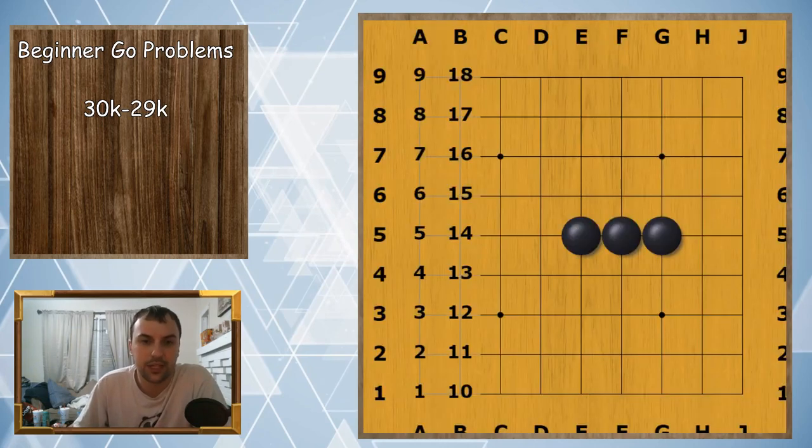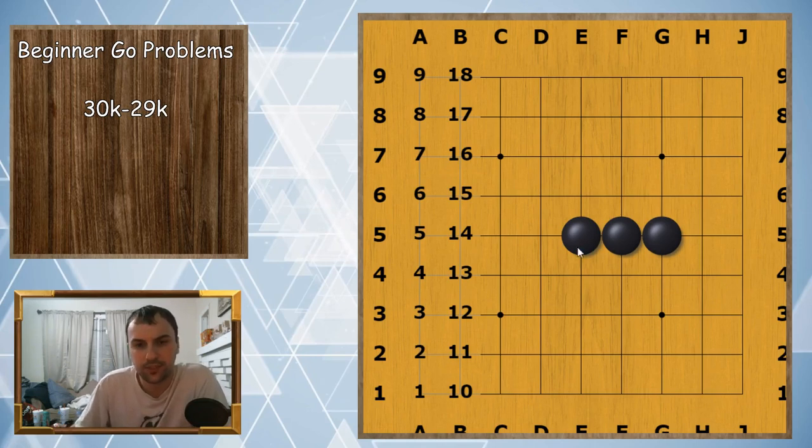This one is with three stones and this is to show that three stones in a row actually have a good amount of liberties. So this is three, six, seven, eight.